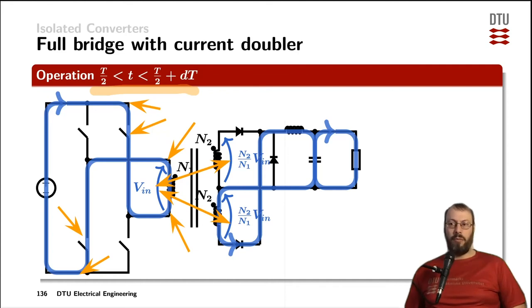Ampere's law forces the current from the primary side to get transferred over into the secondary side. The lower diode conducts, magnetizes the inductor, and provides load and capacitor current. The upper diode is blocked due to the voltage applied from the upper secondary winding.